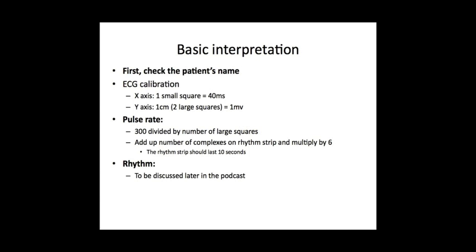You then go on to check the rate — the pulse rate — and there are two ways of doing this. If you're good at dividing numbers, you take 300 and divide it by the number of large squares between each QRS complex, and that will give you the rate. But if you're not good at division, the other way is to look at the rhythm strip, which should last 10 seconds, and multiply the number of complexes on the rhythm strip by six to get the number in 60 seconds. You can also just look at the top of the ECG.